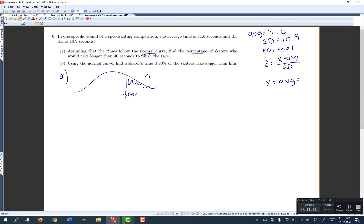It's z equals x minus the average over the standard deviation, or x equals the average plus z times the standard deviation. Now you have to ask yourself in this situation, which one are we looking for?